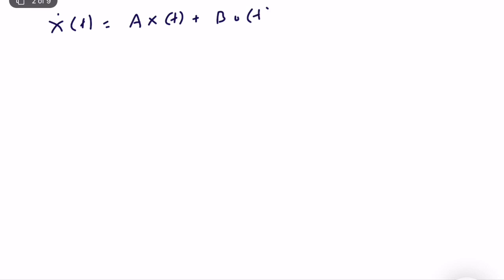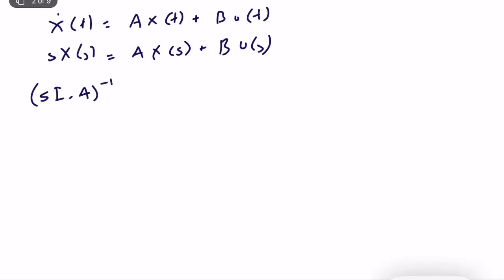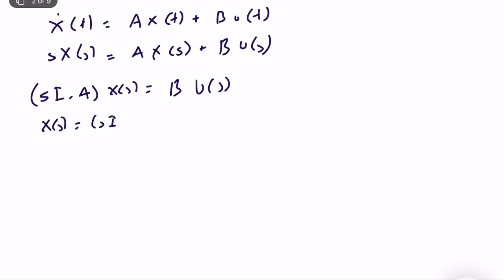Now let's consider the case with no initial condition but with an input. We have the same equation: ẋ(t) = Ax(t) + Bu(t), but x₀ = 0. Taking the Laplace transform and organizing, we get (sI minus A)X(s) = BU(s), so X(s) = (sI minus A) inverse times B times U(s). This is the system evolution equation in the Laplace domain.